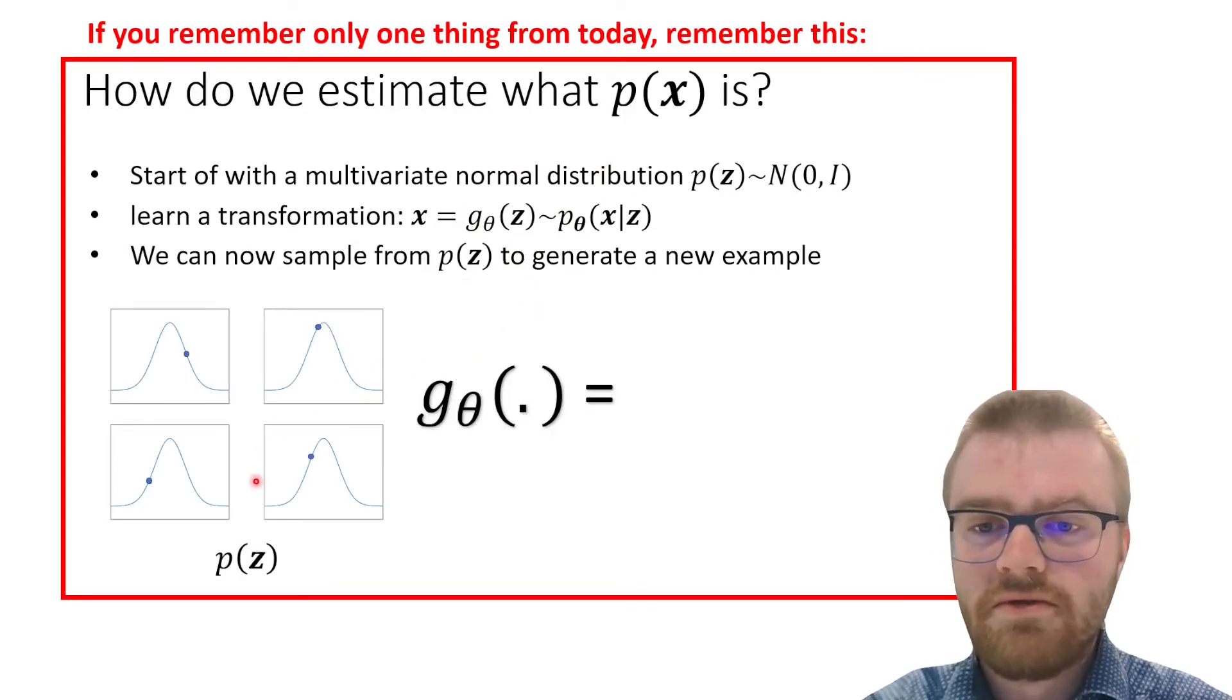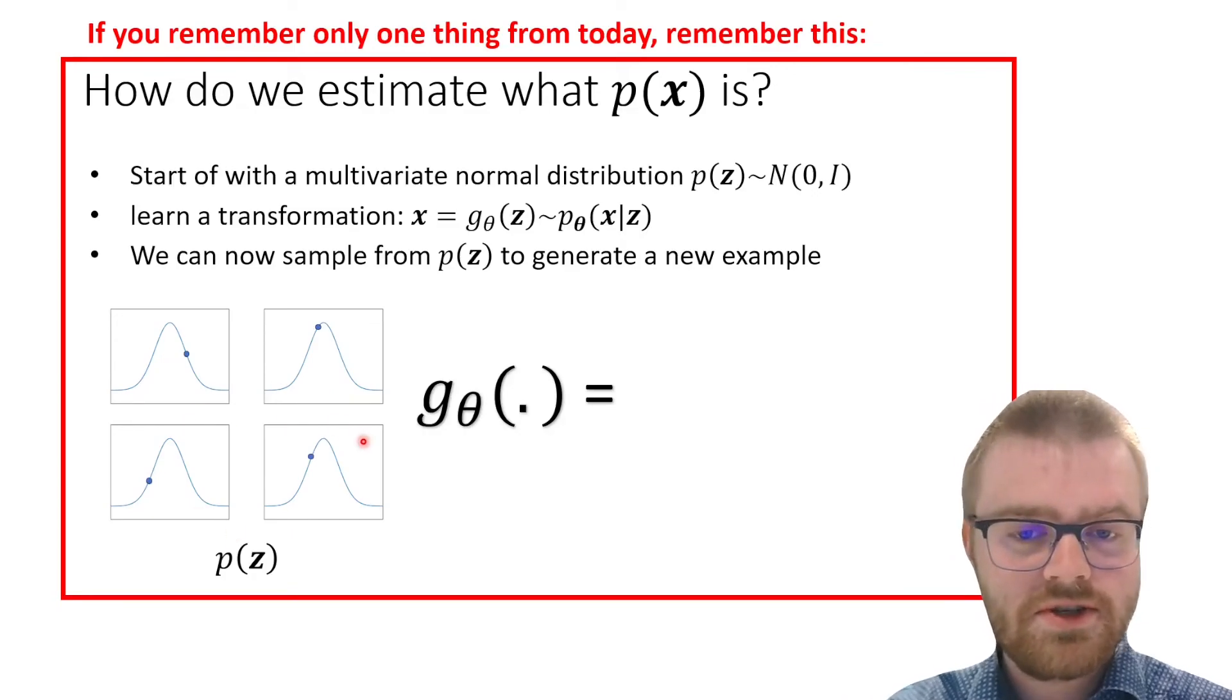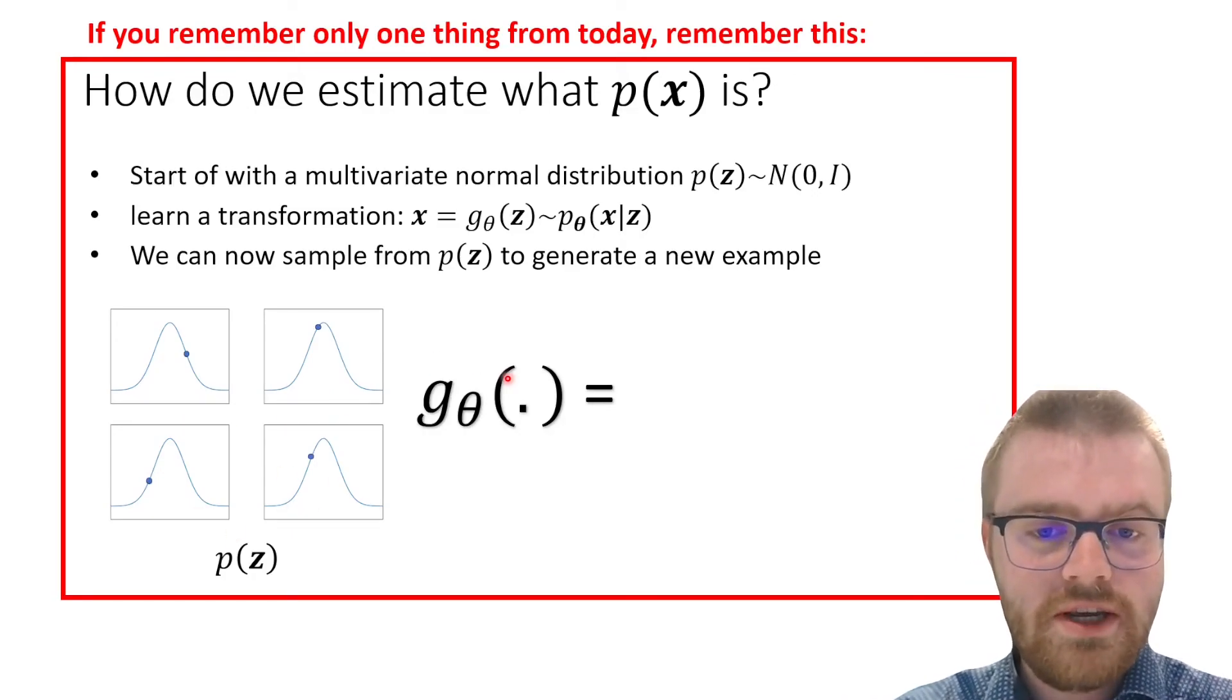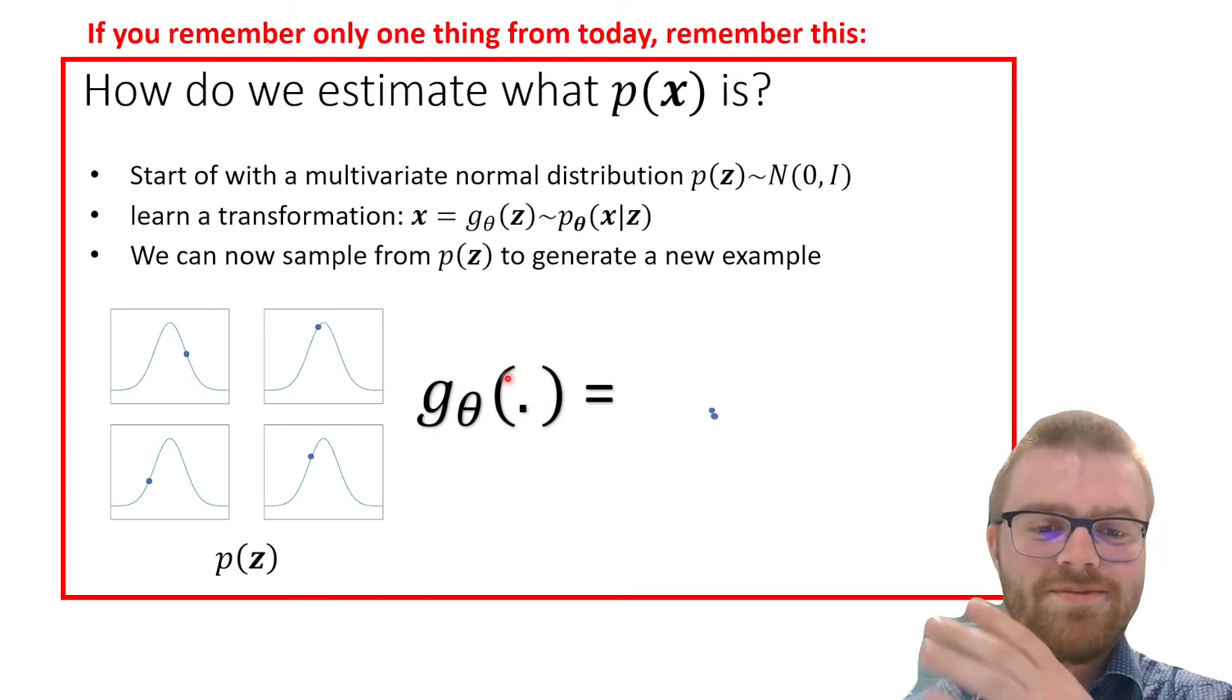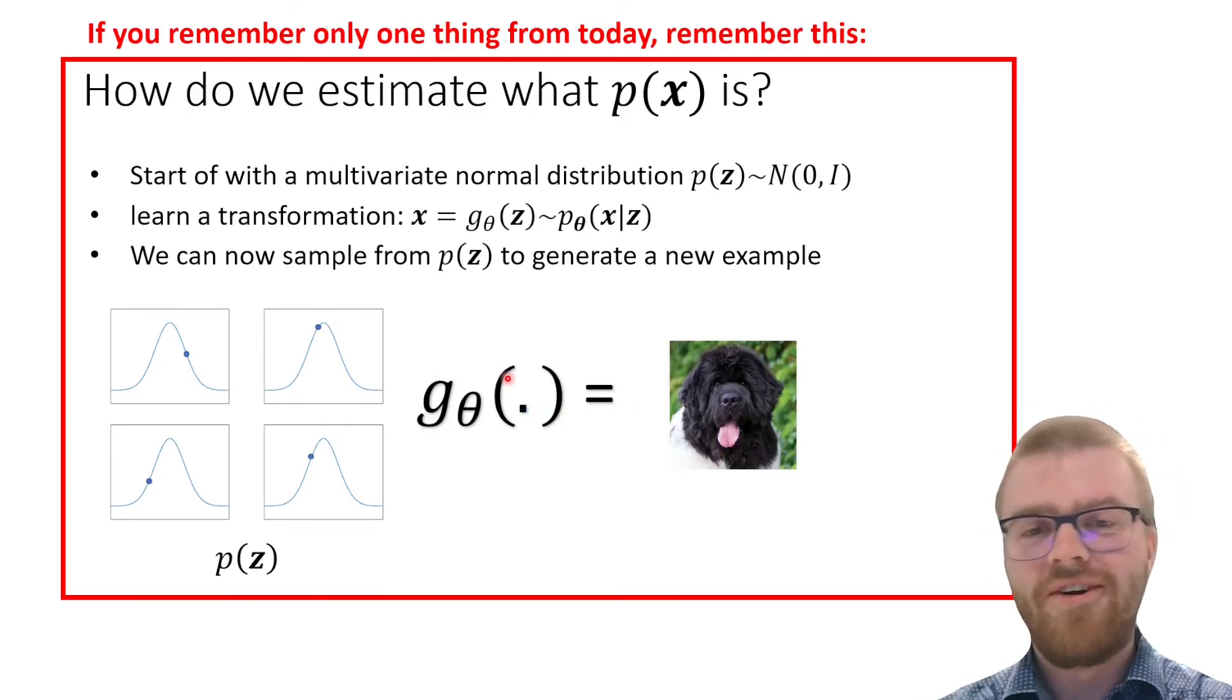So for example, we have four latent dimensions and then we map through g, and tada, out comes a new picture of a dog.